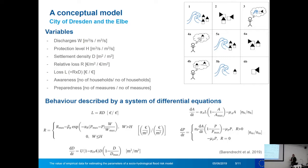We describe the system with the following variables: we have the discharges; a protection level — if the discharge is higher than the protection level, this results in damage; the settlement density, representing the exposure, i.e. how many people are living in the floodplain; the relative loss caused by the discharge; and together with the settlement density, this relative loss results in an actual loss. This loss may increase the awareness — the number of households aware of the risk — and if households become aware, they may increase their preparedness by taking more measures.